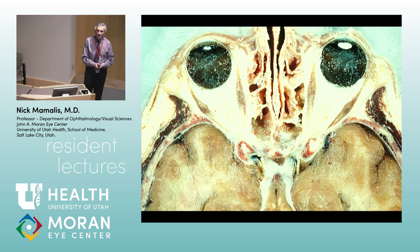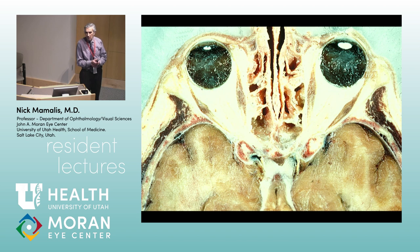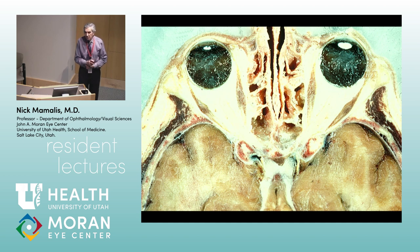I lost count — I think that's seven. When we look at the orbit, we break it into different parts. Tina, what are the three main areas of the orbit? How do we subdivide it? The subperiosteal space is a potential space — it's not a real space.